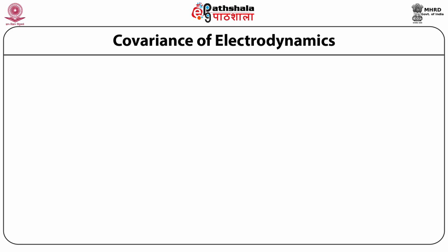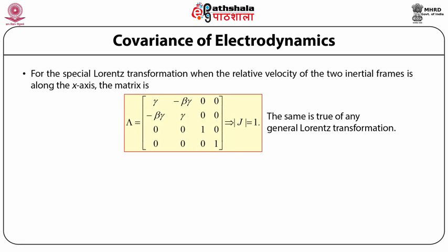Covariance of electrodynamics. For the special Lorentz transformation where the relative velocity of the two inertial frames is along the x-axis, the Lorentz transformation matrix λ is a 4×4 matrix. Its elements are: first row: γ, −βγ, 0, 0; second row: −βγ, γ, 0, 0; third row: 0, 0, 1, 0; fourth row: 0, 0, 0, 1. For this Lorentz transformation matrix, the Jacobian of the transformation is equal to 1, and this is also true for any general Lorentz transformation.